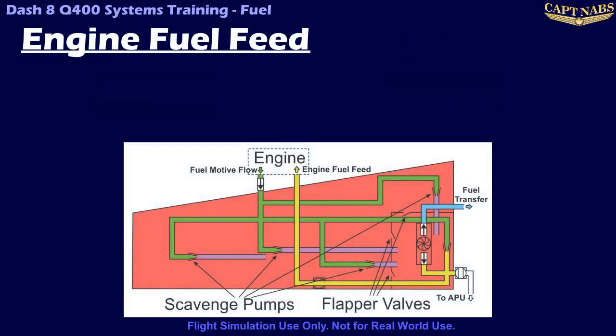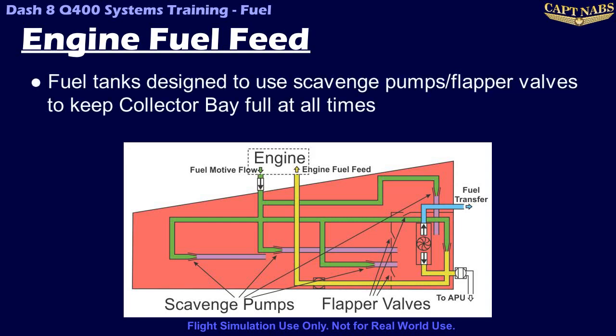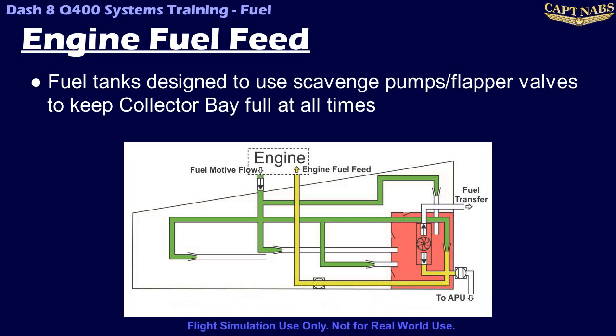The primary purpose of the fuel system is to ensure a continuous supply of fuel to the engines at all times. Part of this is accomplished by the design of the fuel tanks, which are designed to keep the collector bay full at all times, even when the rest of the tank is nearly empty and at all aircraft attitudes. From the collector bay, fuel is fed to the engines by a primary ejector pump, or an auxiliary AC electric pump.